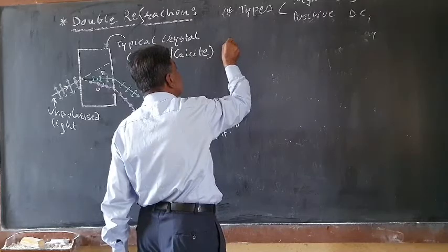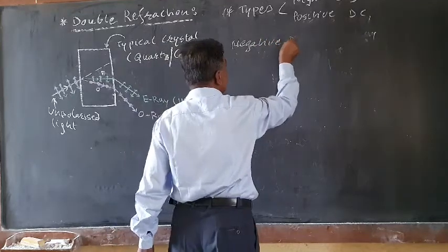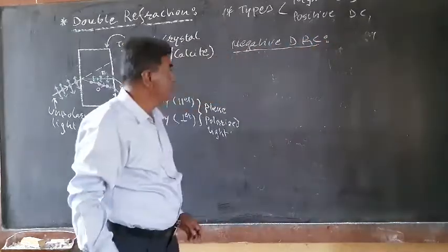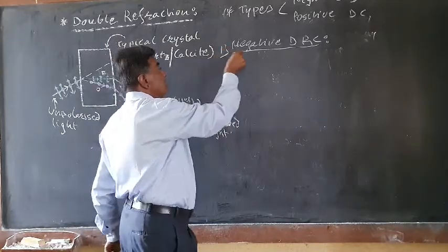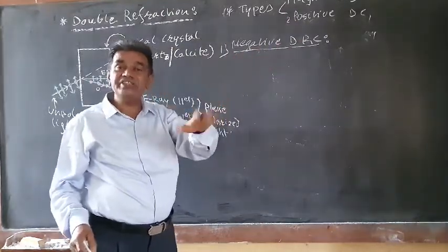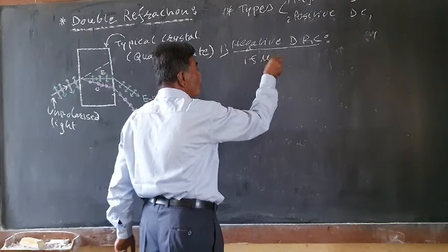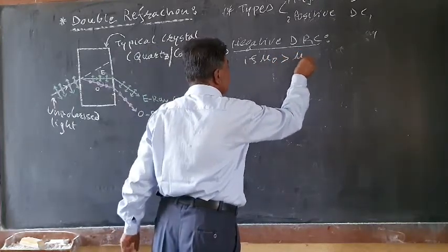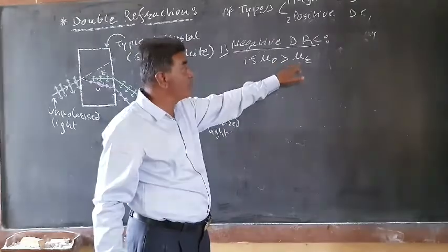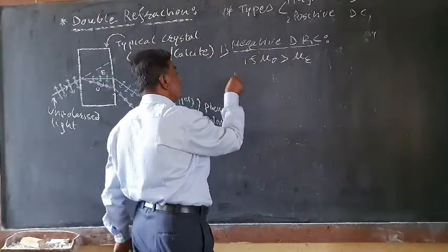The negative double refracting crystal: a crystal is said to be a negative double refracting crystal if the refractive index of the ordinary ray is greater than the refractive index of the extraordinary ray — that is, if μ_O > μ_E.